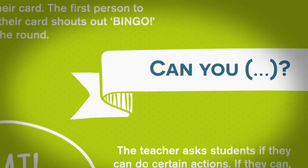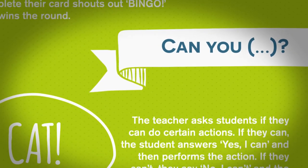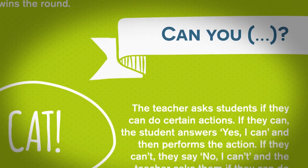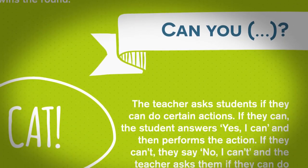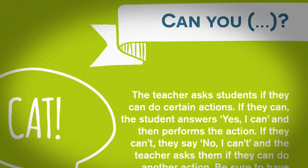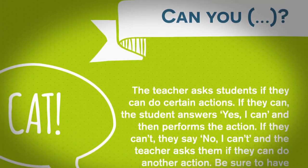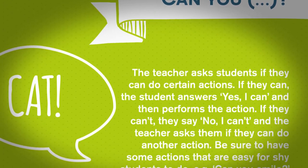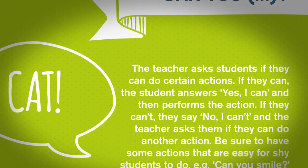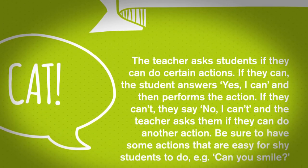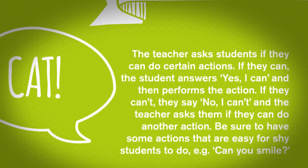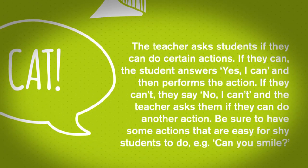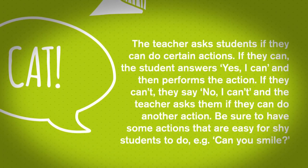Can you? The teacher asks students if they can do certain actions. If they can, the students answer "Yes, I can" and then perform the action. If they can't, they say "No, I can't" and the teacher asks them if they can do another action. Be sure to have some actions that are easy for shy students to do, for example, "Can you smile?"